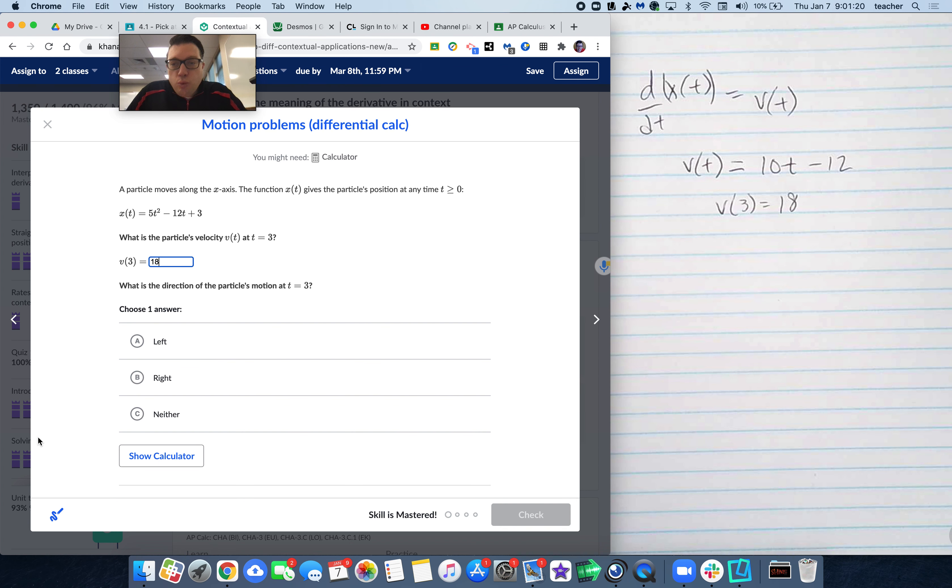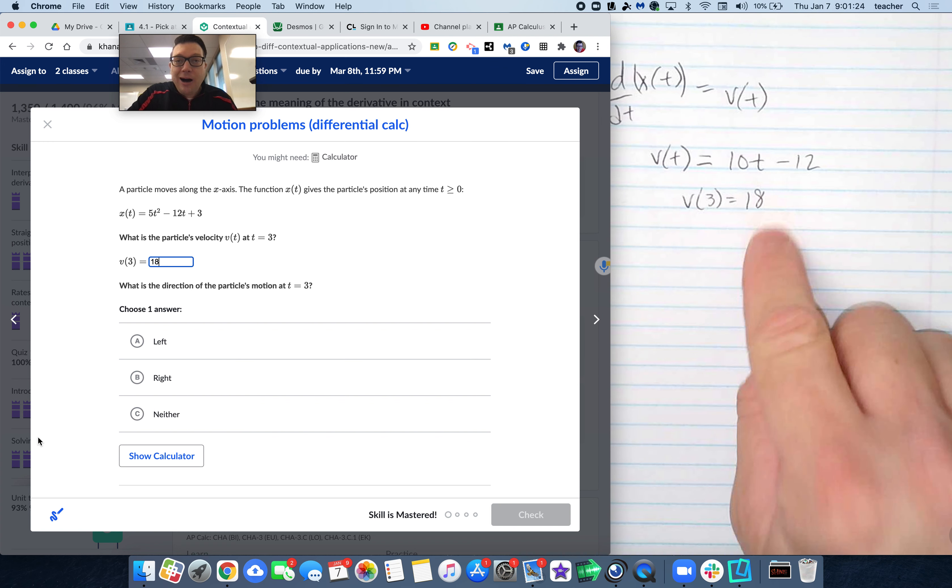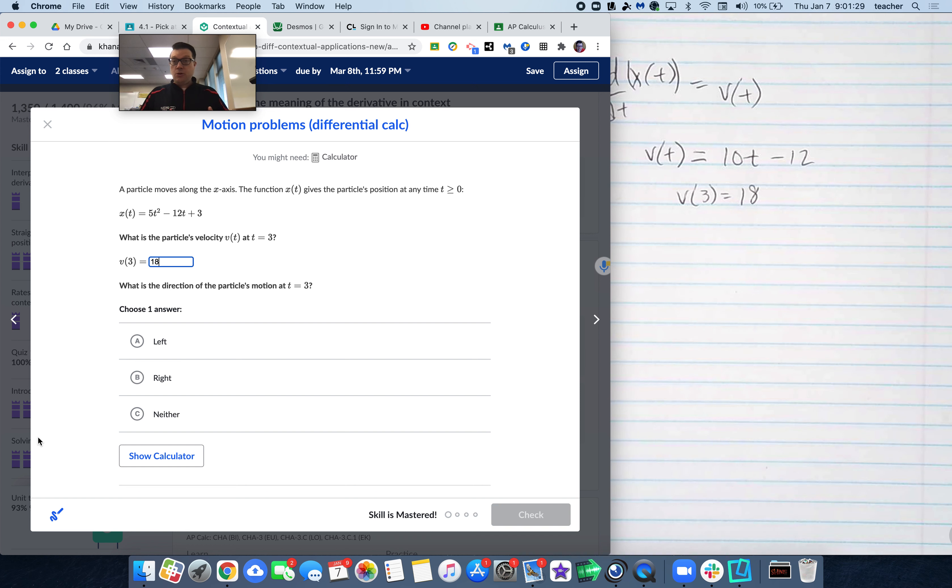Next up, what is the direction of the particle's motion? Well, velocity here we found to be positive. At t equals 3, the velocity is positive, so therefore the particle is moving on the x-axis. It's moving to the right. And select it, and check it.